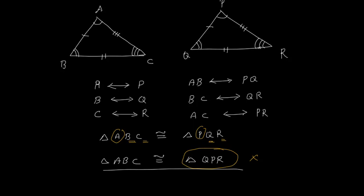You have to maintain the correspondence. Under this correspondence, triangle ABC and triangle PQR are congruent. Congruent means they are exactly the same — all the sides of one triangle are equal to the corresponding sides of the other, and all the angles of one triangle are equal to the corresponding angles of the other. There are a total of 6 parts: 3 angles and 3 sides. If all 6 are equal, the two triangles are congruent.